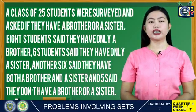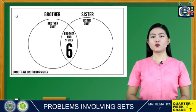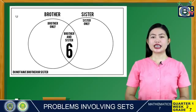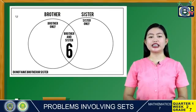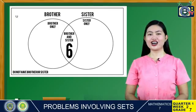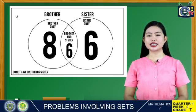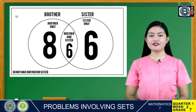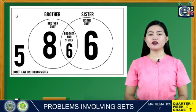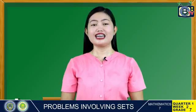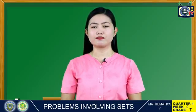Let us see the setup of this given problem in a Venn diagram. Draw the Venn diagram and put the data inside. Put six in the intersection — at the center where the two sets overlap — because six said they have both brothers and sisters. Note the word 'and,' therefore it is intersection. Put eight in brothers only. Put six in sisters only. Last, five students said they don't have sisters or brothers, meaning they are only children — put this data outside the two sets but inside the U.